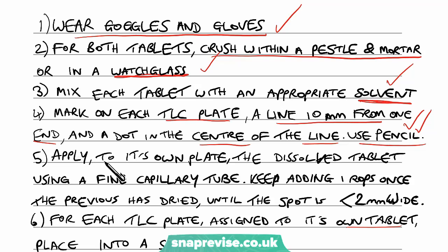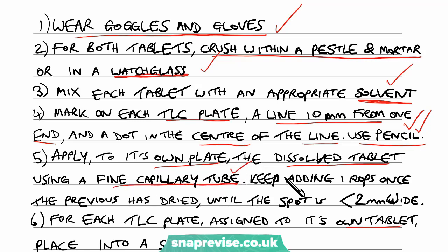Apply to its own plate the dissolved tablet using a fine capillary tube — that's another mark. Keep adding drops once the previous has dried until the spot is 2mm wide. That's another point to make sure that we've added the spot until it's a particular size.